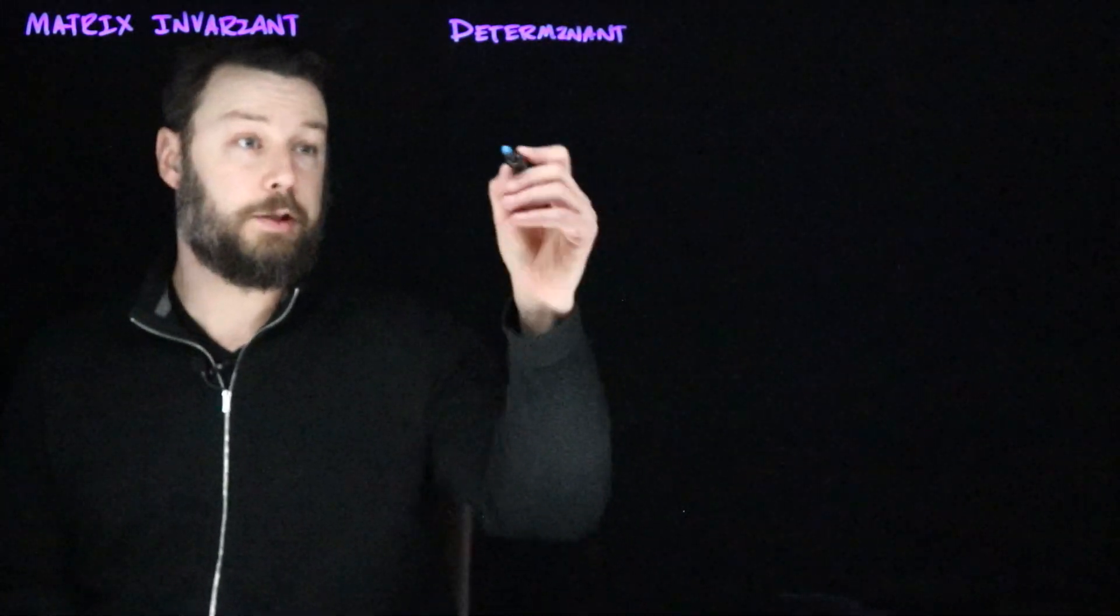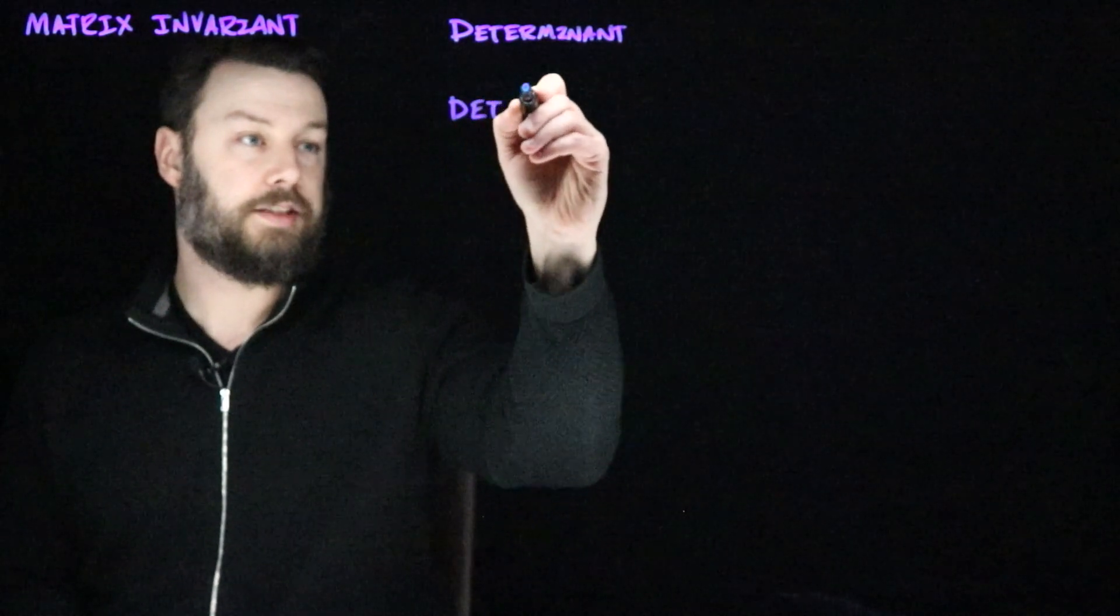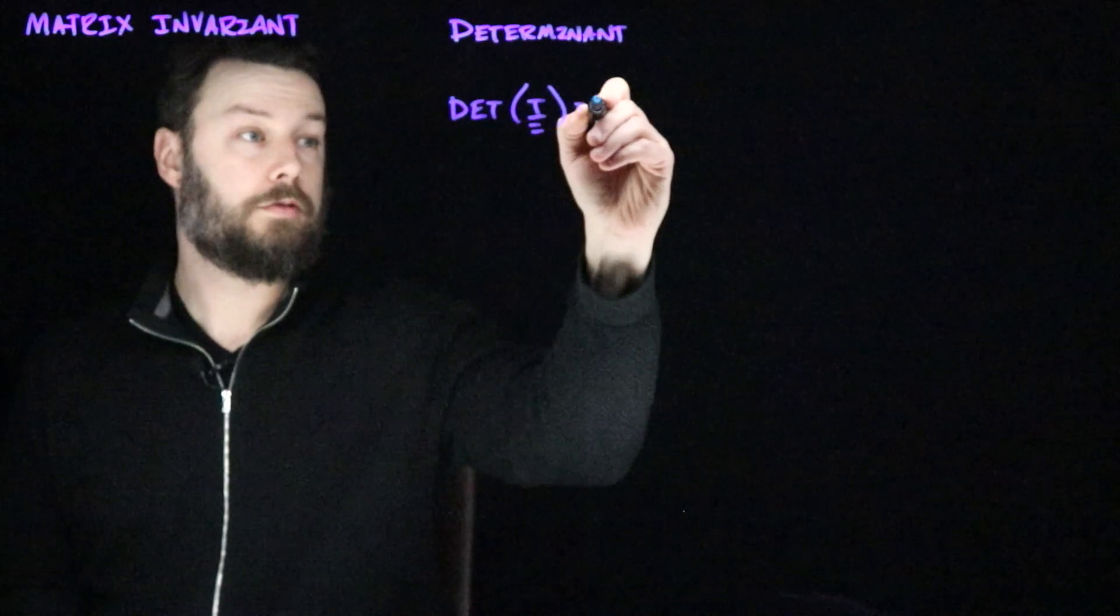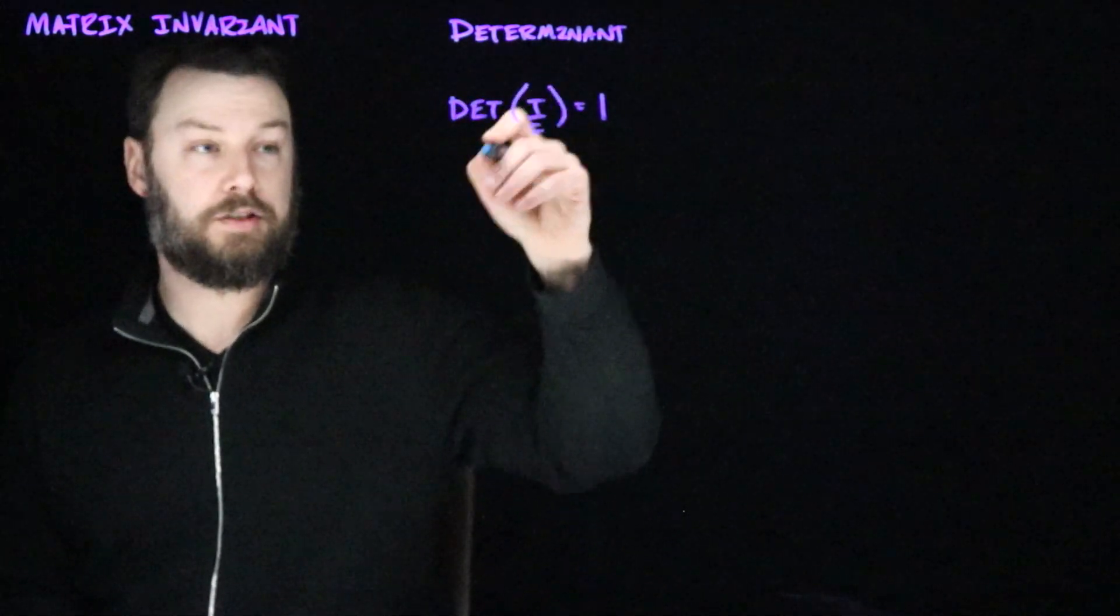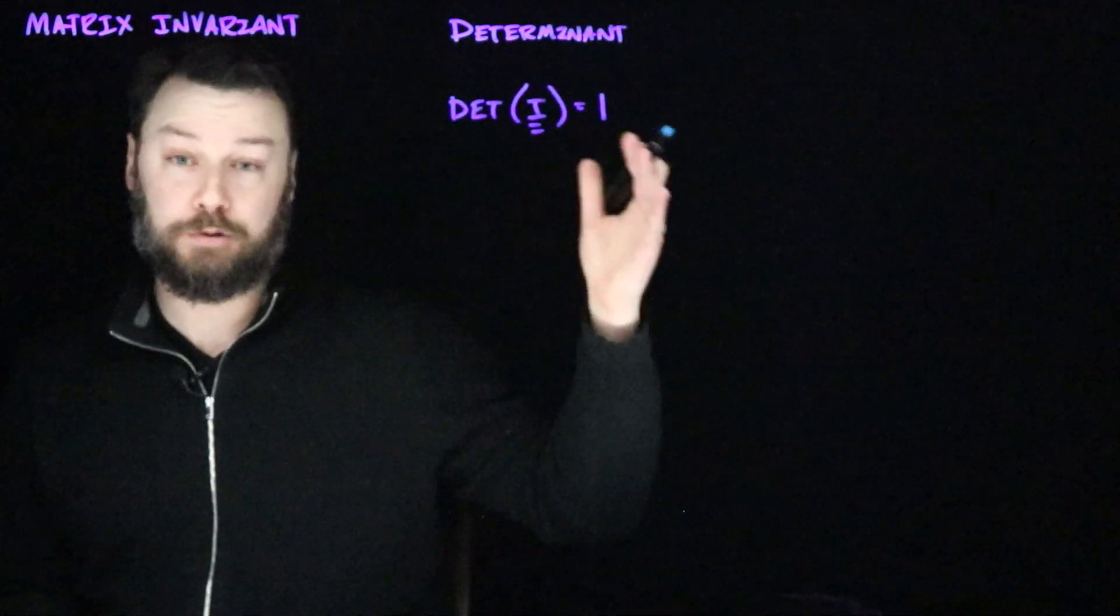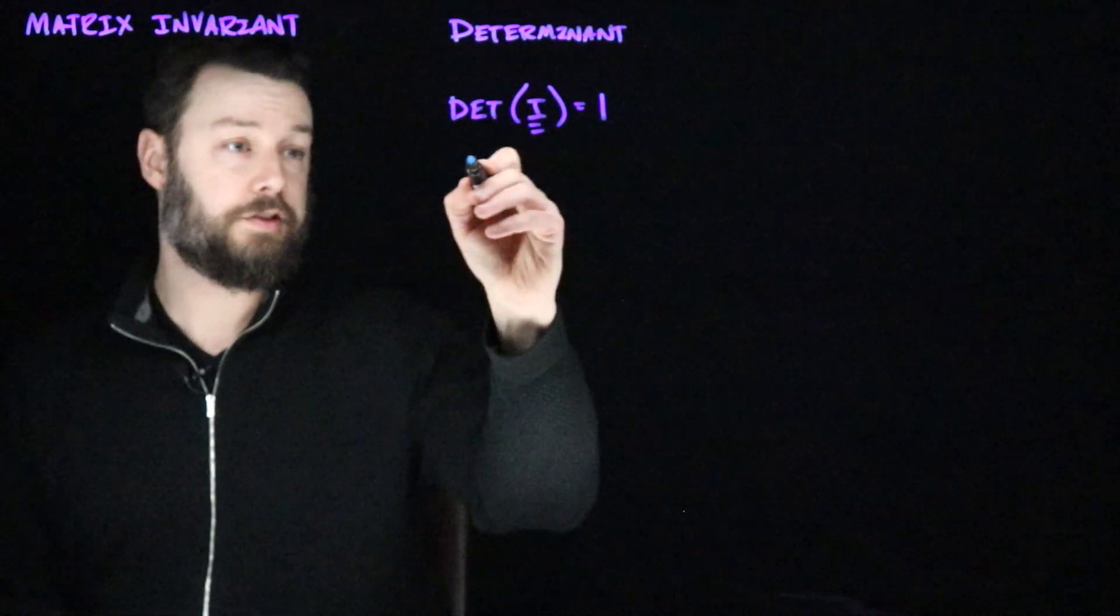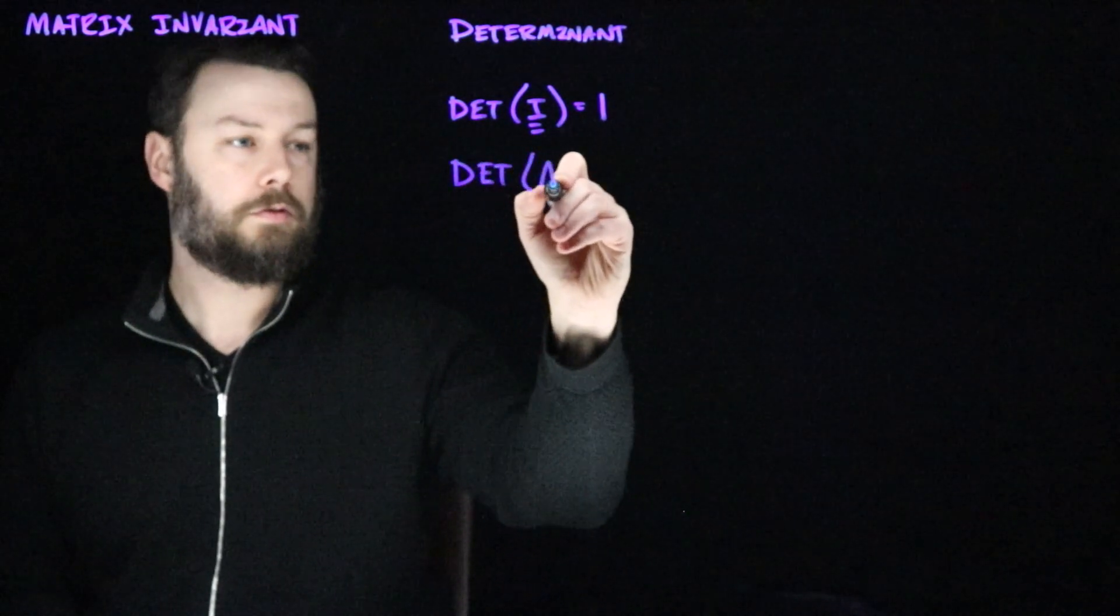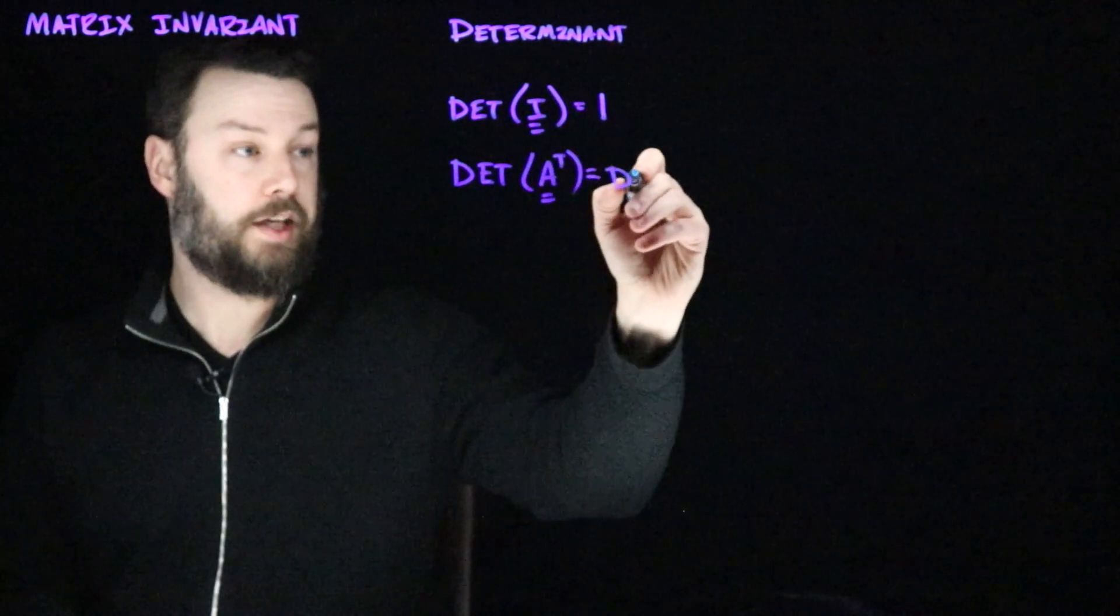So the first major property to be aware of is that the determinant of the identity matrix is 1. And incidentally here, I'm going to write det for determinant, but sometimes also people write what looks like the absolute value symbol around the matrix to indicate determinant. Another thing to be aware of is that the determinant is preserved by transpose. So the determinant of A transpose is just the determinant of A.